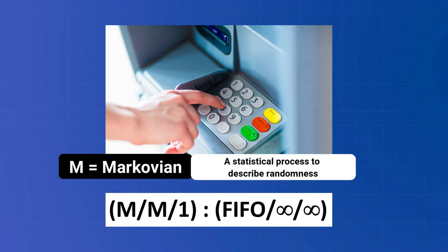M here stands for Markovian, a statistical process used to describe randomness.